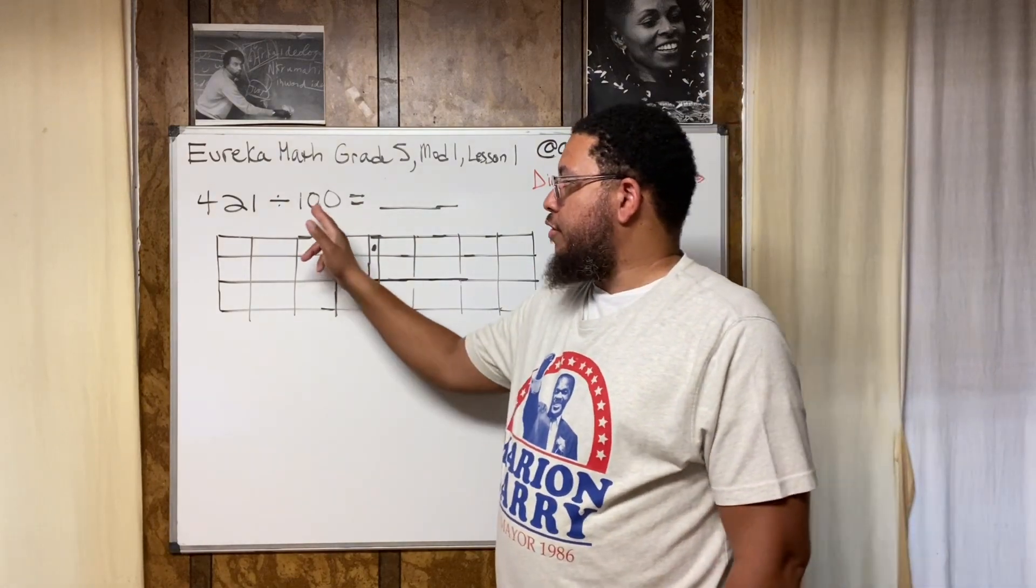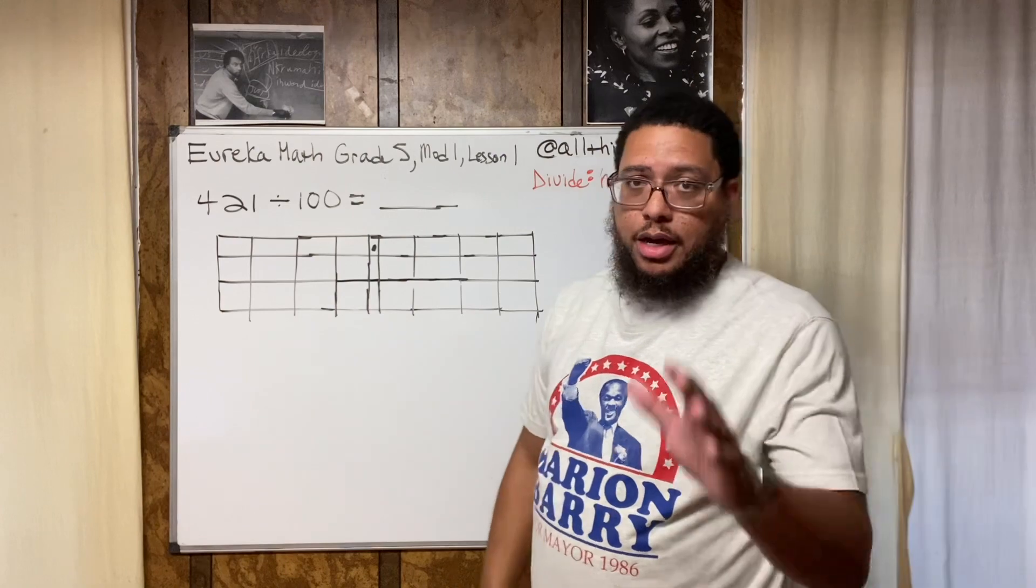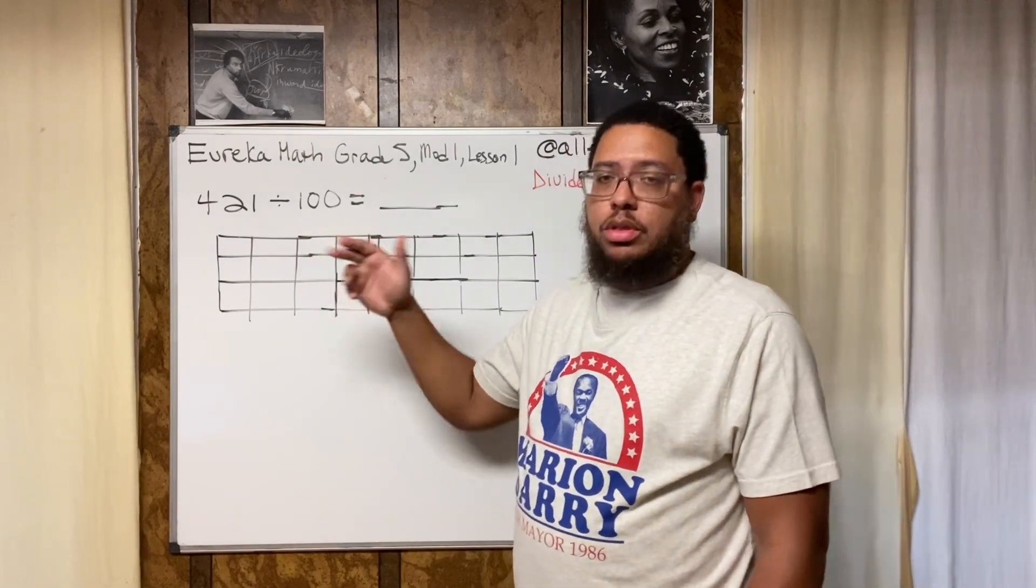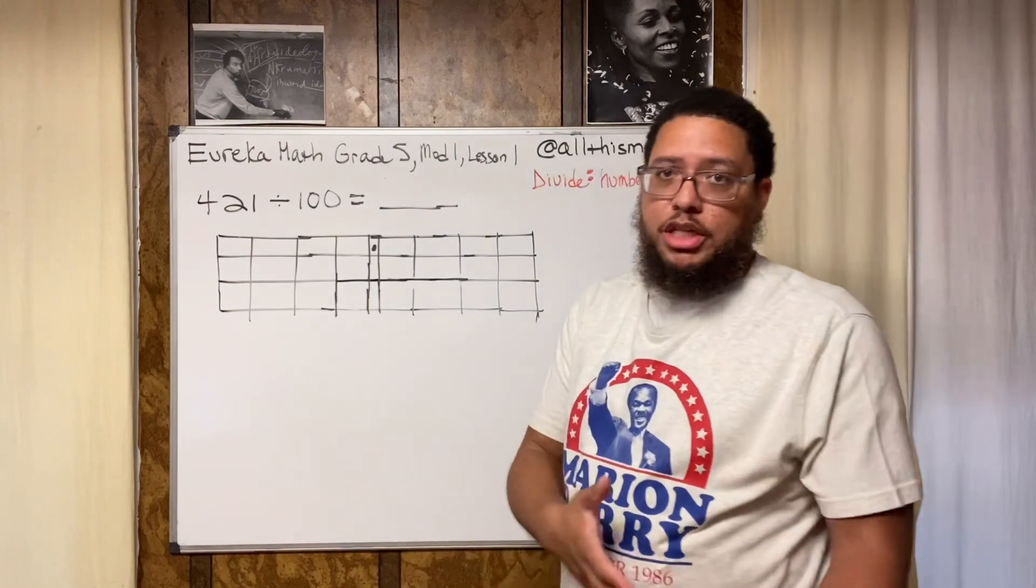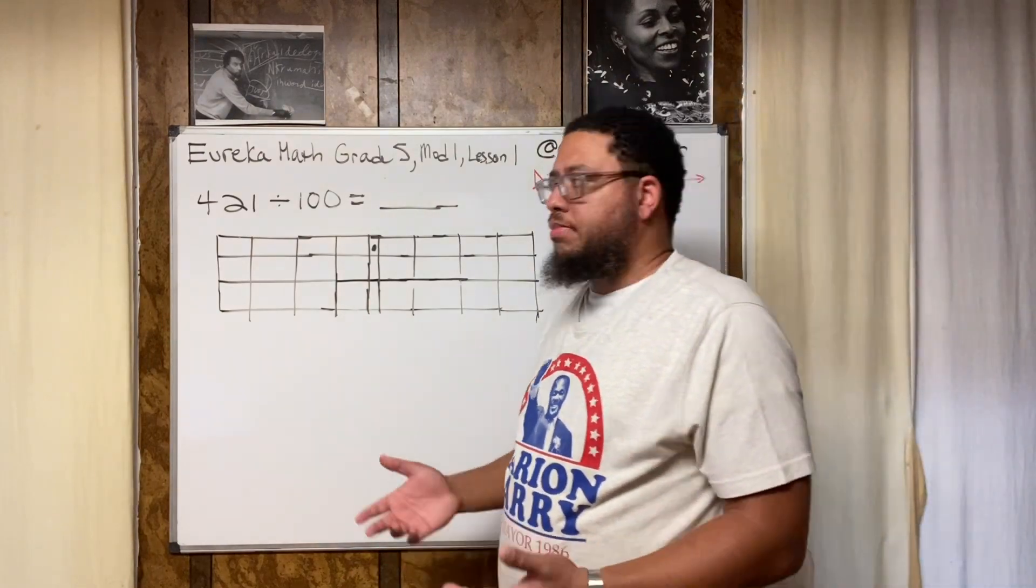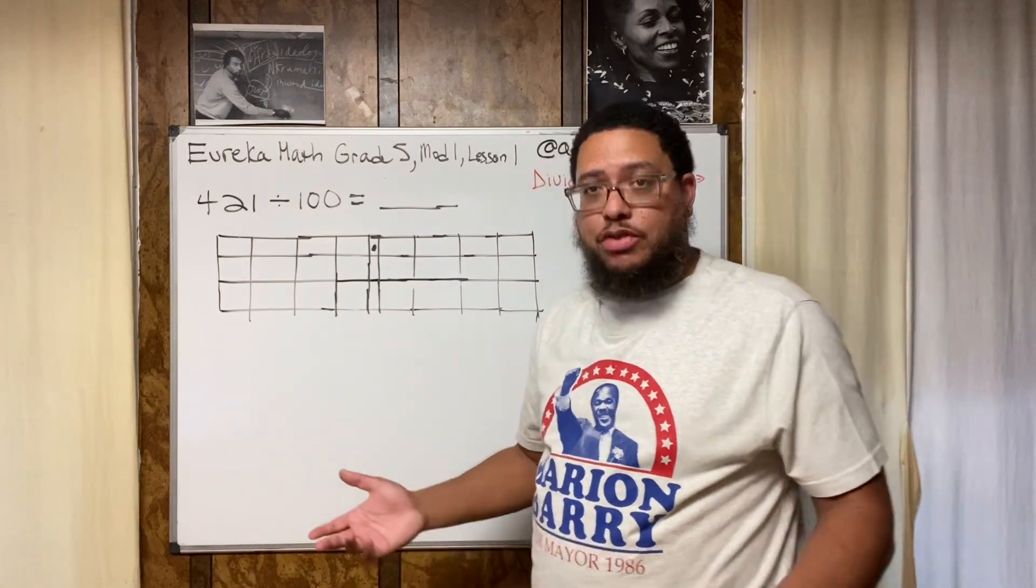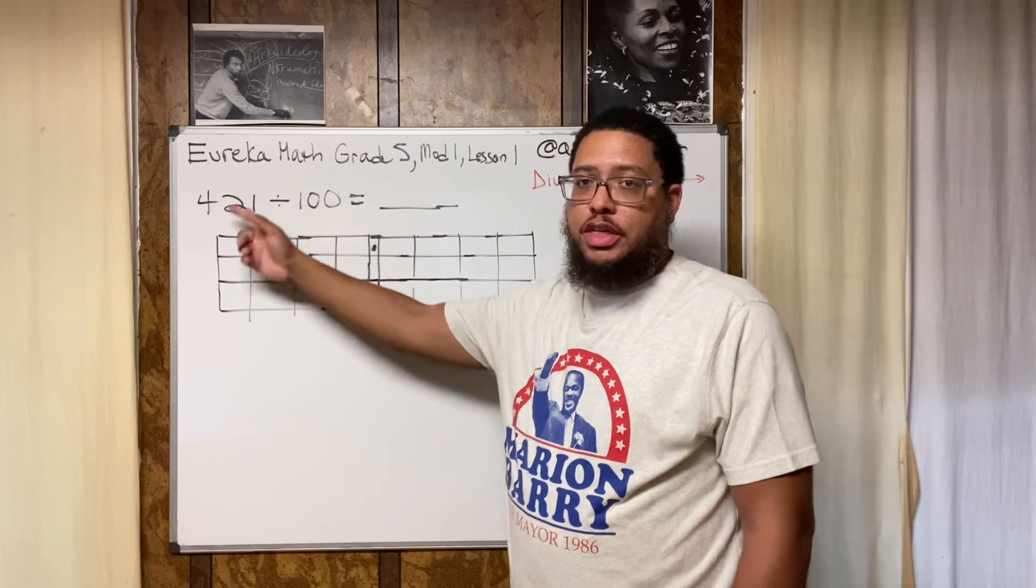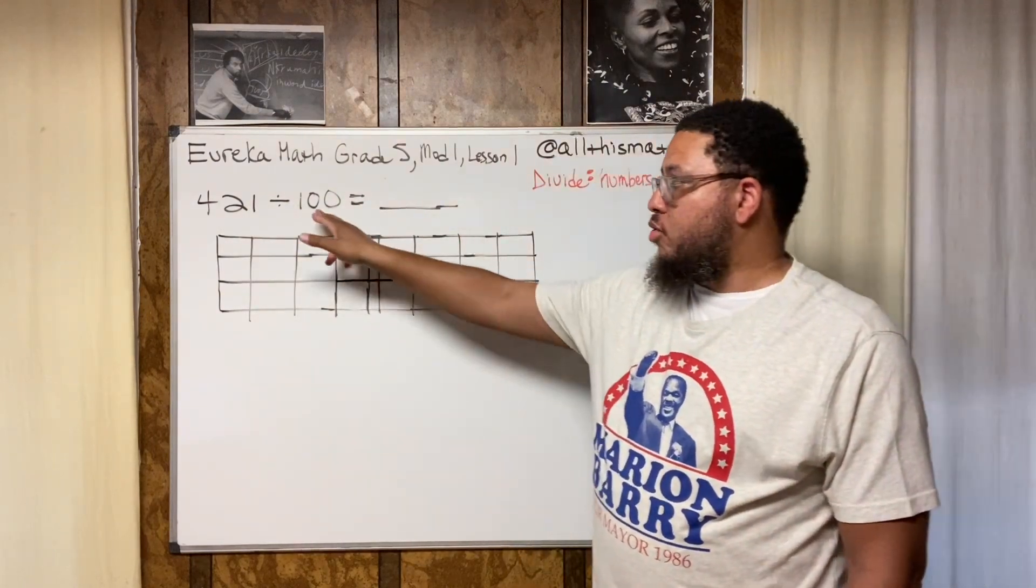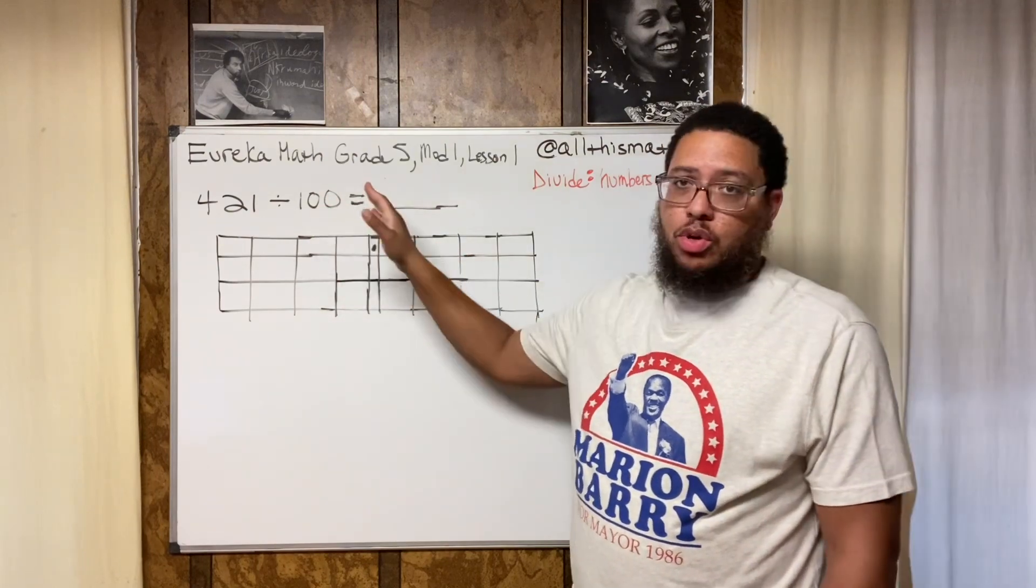If you see two zeros, that means you move two spaces. If you saw three zeros you would move three spaces. If you saw five zeros you would move five spaces. So when we're dividing we're moving the digits to the right and we're moving this many spaces.